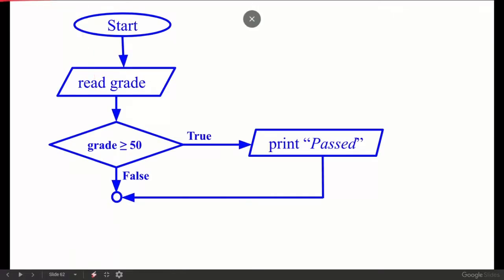Now we have a flow chart. First we have a process started, then we have a flow line. Here we have a grade read. We compare the grade to greater than or equal to 50. If this condition is true, then we print passed.